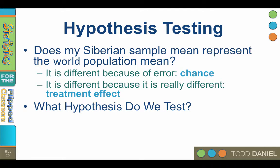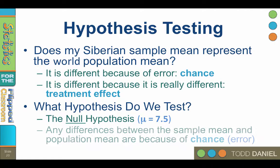So what hypothesis do we test? We are going to test the null hypothesis that the Siberian sample is drawn from a population that has a mean of 7.5, or mu equals 7.5 — any differences between the Siberian sample mean and the world population mean are because of chance. The alternative hypothesis is that the Siberian sample mean is truly different from the world population mean due to an effect, even if we don't know what that effect is.